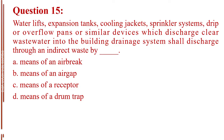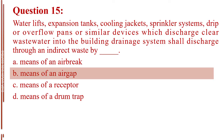Question number 15. Water lifts, expansion tanks, cooling jackets, sprinkler systems, drip or overflow pans or similar devices which discharge clear wastewater into the building drainage system shall discharge through an indirect waste by blank. Letter A, means of an air break. Letter B, means of an air gap. Letter C, means of a receptor. Letter D, means of a drum trap. The answer is Letter B, means of an air gap.